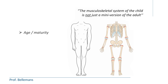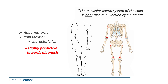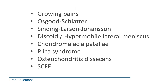As a consequence, typical problems may occur depending on the age and maturity of the child. If we combine that with knowledge about the exact location of the pain and its specific characteristics, it is often easy to make the correct diagnosis, because these factors are highly predictive. As a matter of fact, there are only a handful of conditions that may actually be present, and these are listed here.